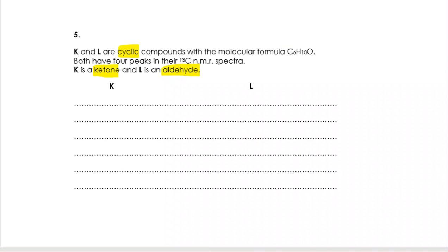K and L, cyclic compounds, C6H10O. They both have four peaks. K is a ketone, so I'm thinking ketone C double bond O in the middle of a carbon chain. It's cyclic. Let's build that ring and see what happens. And I can go around those carbons and I can see I've got one, two, three, four environments.